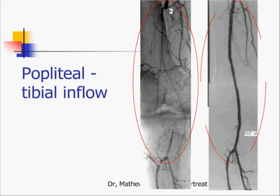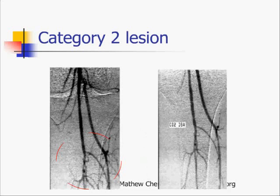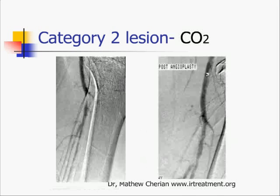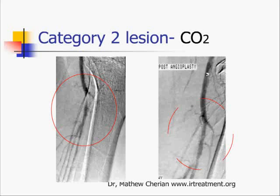Here is a popliteal inflow occlusion and the results after angioplasty. This is a category 2 lesion which was treated by plain balloon angioplasty. This is another tibio-peroneal trunk stenosis, category 2, which was also treated by angioplasty.